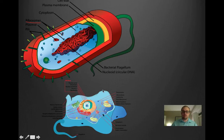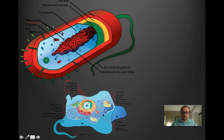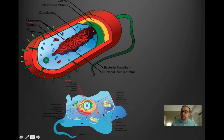This is different from, for example, this eukaryotic animal cell here, which has a lot of organelles such as the mitochondria and the nucleus. What these all have in common is that they are membrane-bound organelles. These are only found in eukaryotic cells, whereas prokaryotic cells like bacteria do not have membrane-bound organelles.